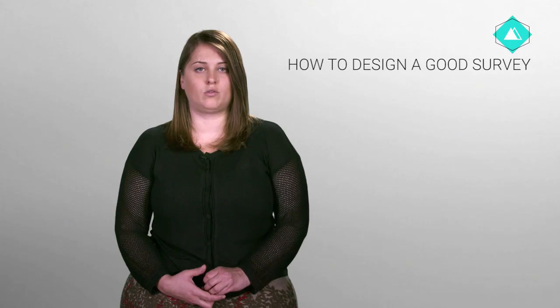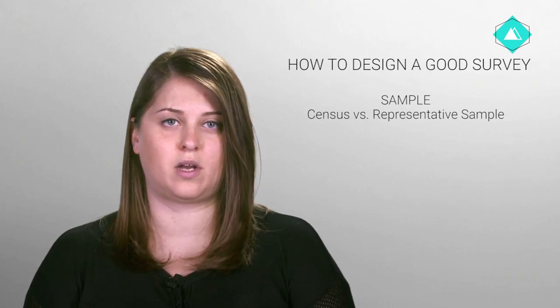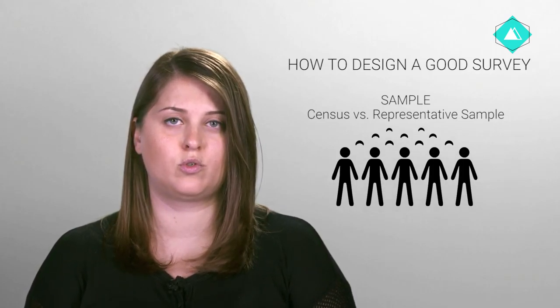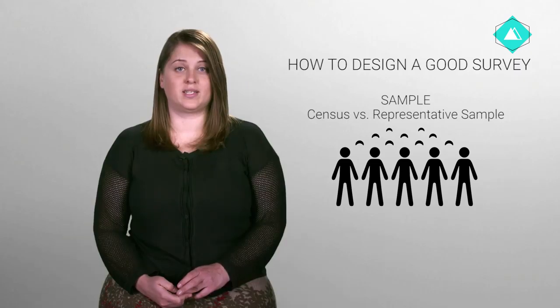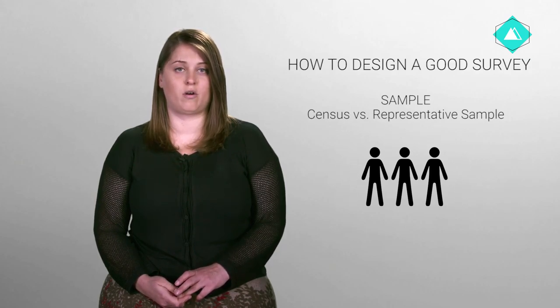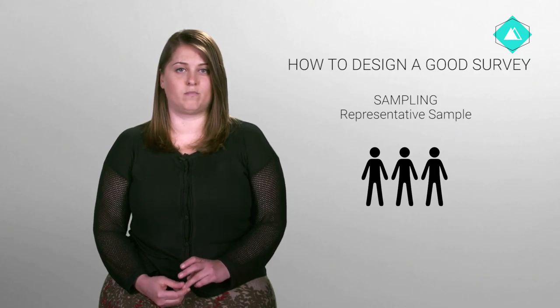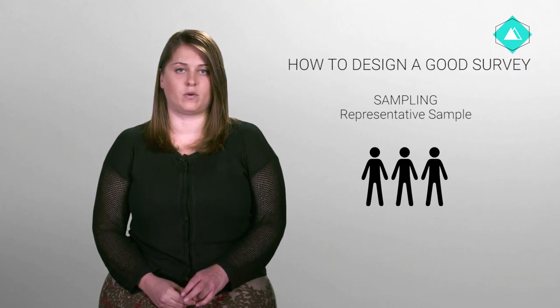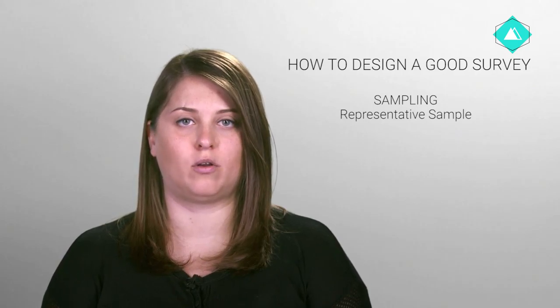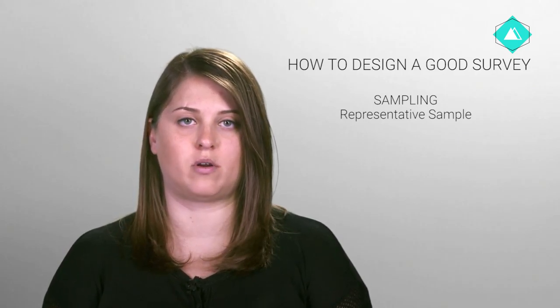Now that you know who your target group is, you have to get a sample of that group. There are two types of samples: exhaustive and representative. The only example of an exhaustive sample is a census, where all or almost all of the population is interviewed. But a census is typically very expensive, so most surveys use a subset of the population, or a representative sample. Designing a sample to eliminate sources of bias and to represent the target population accurately is the key problem in designing a survey project. Keep in mind that the sampling methodology must be documented during the survey design process.